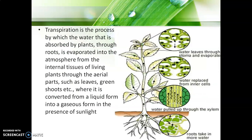In the transpiration process, first the water is absorbed by the roots from the soil. This water is then pulled up through the xylem to all the upper parts of the plant. The water then enters the leaves and from the leaves it goes into the atmosphere through stomata or guard cells in the form of water vapors.